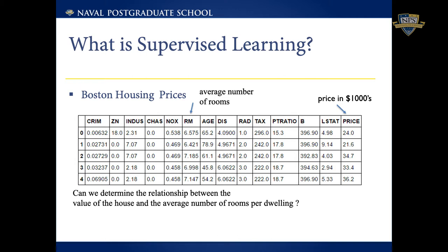Another example of supervised learning is not only classification but also regression, where you're trying to estimate a continuous value. A very famous data set for this is called Boston housing prices. Typically what we're trying to do is figure out the relationship between the value of a house and the average number of rooms per dwelling — developing a model that can help you predict the price of a house depending on its size.